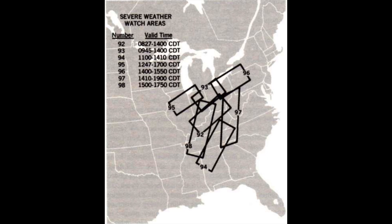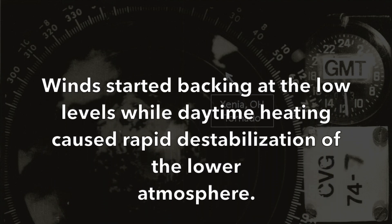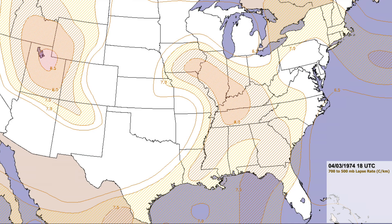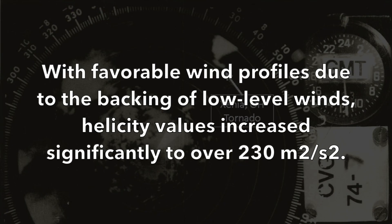As the morning of April 3rd ensued, severe weather watches were being issued by the National Severe Storms Forecast Center, or the NSSFC, across the Ohio and Tennessee Valleys. Around 10 a.m. Central Daylight Time, a new band of scattered thunderstorms developed over eastern Arkansas and Missouri. Winds started backing at the low levels, while daytime heating caused rapid destabilization of the lower atmosphere. Cool mid-level advection had occurred over the warm sector ahead of the band, which strengthened the lapse rates, aiding in rapid upward motion. By 1 p.m., CAPE values were in excess of 2,500 joules per kilogram over the lower Ohio Valley. With favorable wind profiles due to the backing of low-level winds, helicity values increased significantly to over 230 meters squared per second squared.